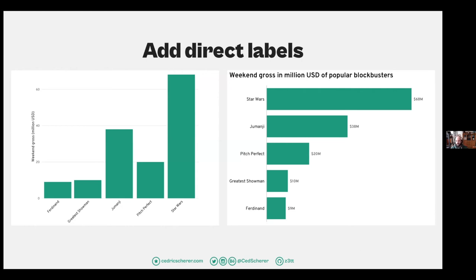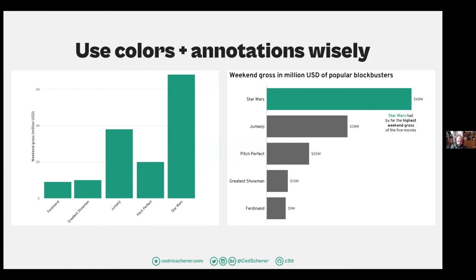If you want to use colors, according to my theme they could all be gray, but if you really want to tell a story, you could use colors and annotations to make people focus on maybe the Star Wars movie — which has the highest weekend gross in our example — or on another one your article is about, depending on the context in which you're using this visualization.